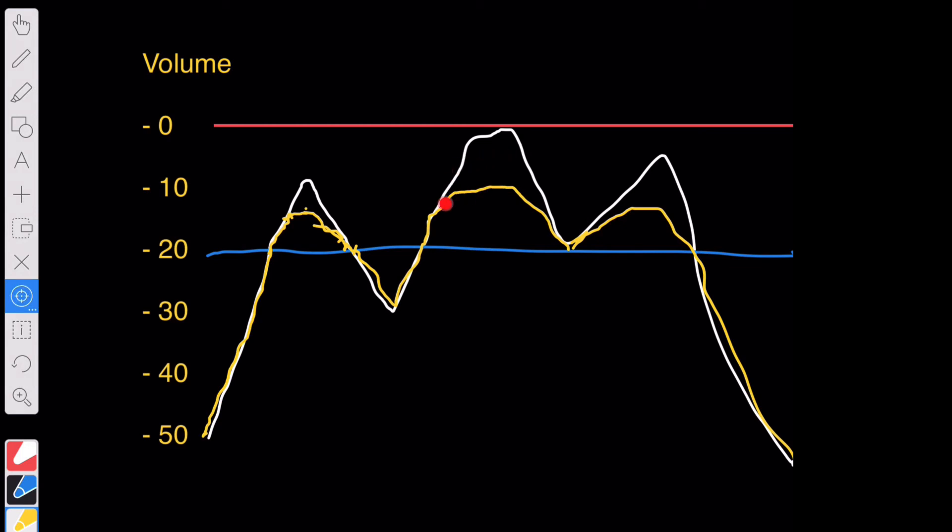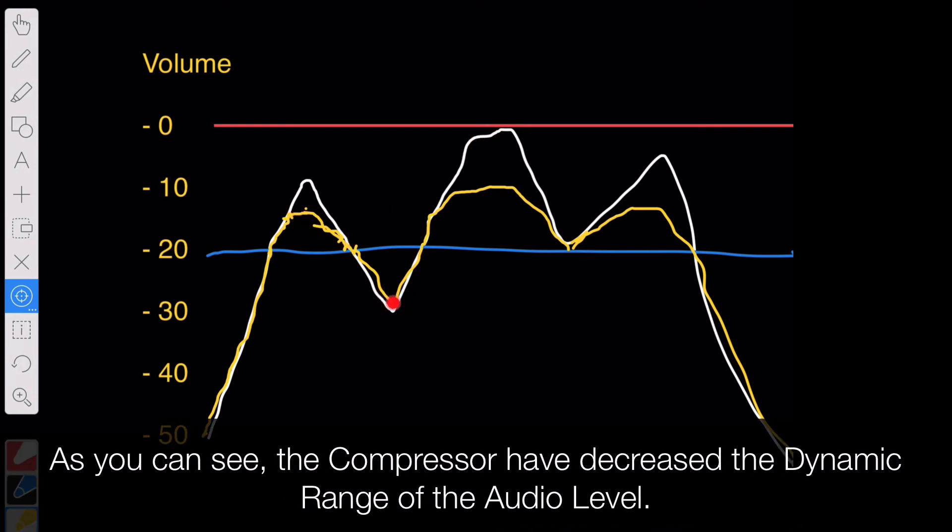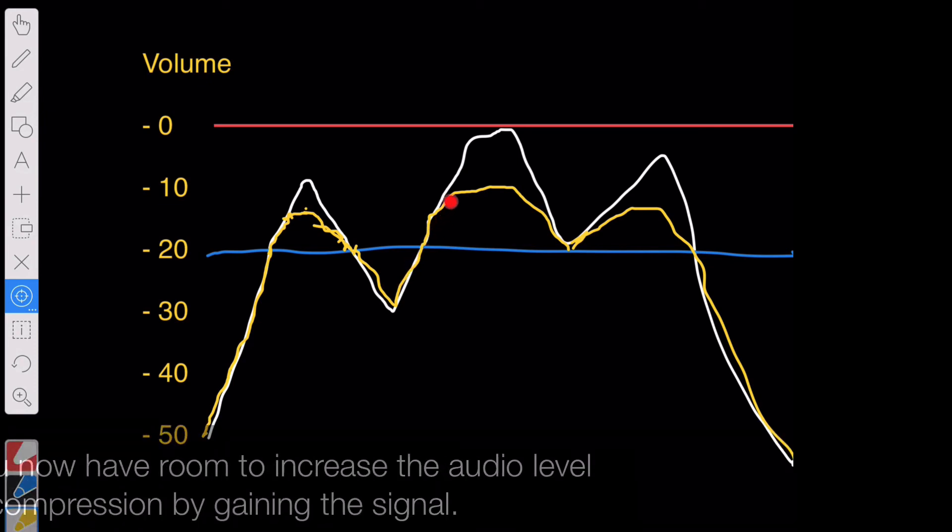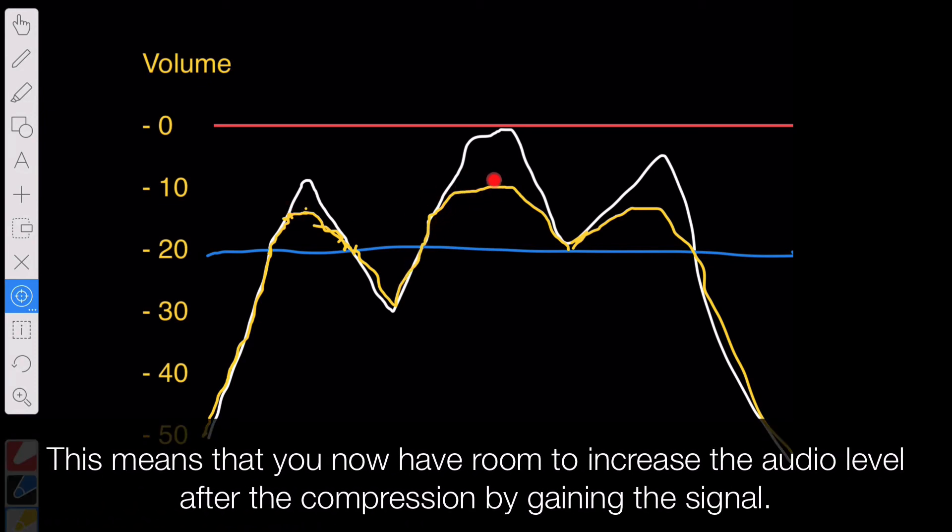Now here comes the important part. As you can see here now, the peak values are no longer at the top of the digital scale. Which means that you have decreased the dynamic range, which is the difference between the lower parts and the louder parts of the audio. And this means that you can now, after the compression has been applied, increase by gaining the volume level. So that these peaks are once again closer or at the top of the digital audio scale. Which means that the average loudness level will be higher for this track afterwards.